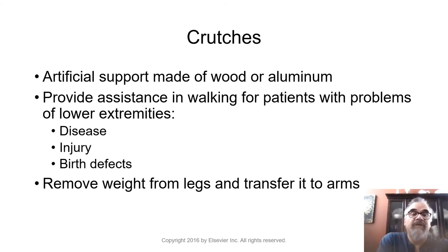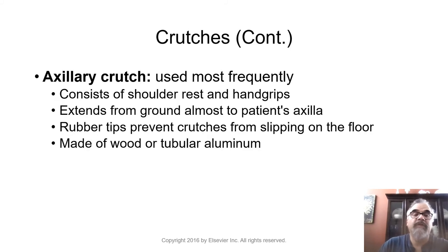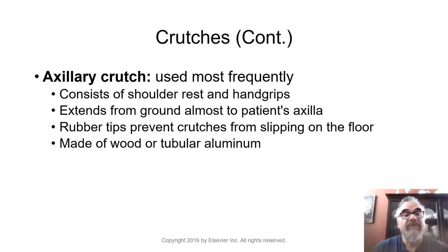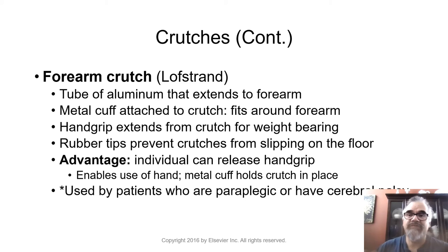Crutches are artificial supports made of wood or aluminum. They provide assistance in walking for patients with problems with lower extremities due to disease, injury, or birth defect, and help transfer weight off the legs to the arms. The axillary crutch is used most frequently — it consists of a shoulder rest and hand grips, extends from the ground almost to the patient's axilla (armpit), and has rubber tips to prevent slipping. These are made of wood or tubular aluminum — about 99% of crutches today are aluminum, not wood.